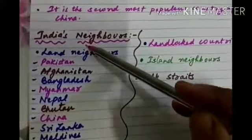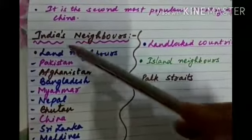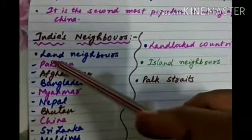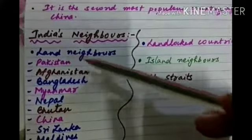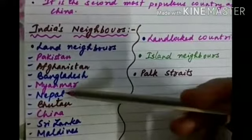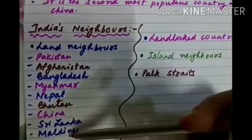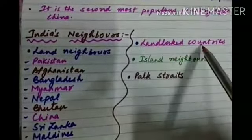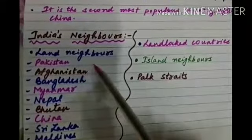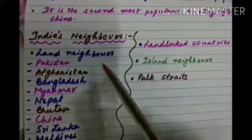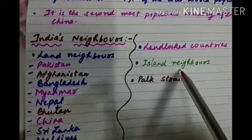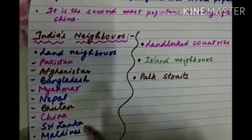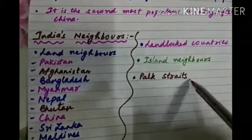Just as we have neighbors who live next to us, India also has certain neighboring countries. India's land neighbors are Pakistan, Afghanistan, Bangladesh, Myanmar, Nepal, Bhutan, China, Sri Lanka, and Maldives. Landlocked countries are those not having access to a sea route. Island neighbors include Sri Lanka and Maldives. Sri Lanka is connected to India by a strait known as the Palk Strait.